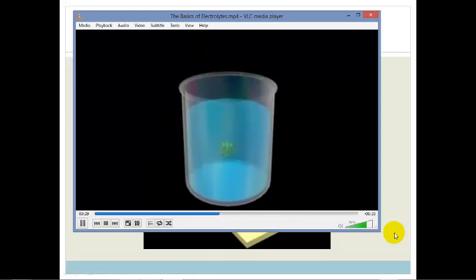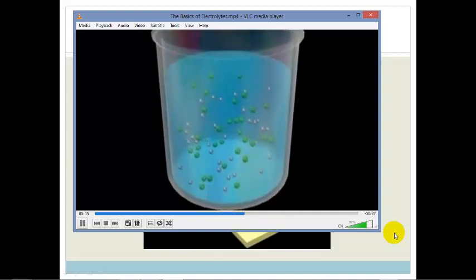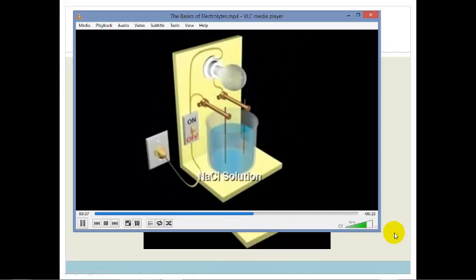When sodium chloride is dissolved in water, it forms a solution of separated sodium and chloride ions. The presence of ions in the solution is responsible for the fact that the solution is a conductor of electricity. Substances such as sodium chloride that exist in aqueous solution entirely or nearly entirely as ions are called strong electrolytes.